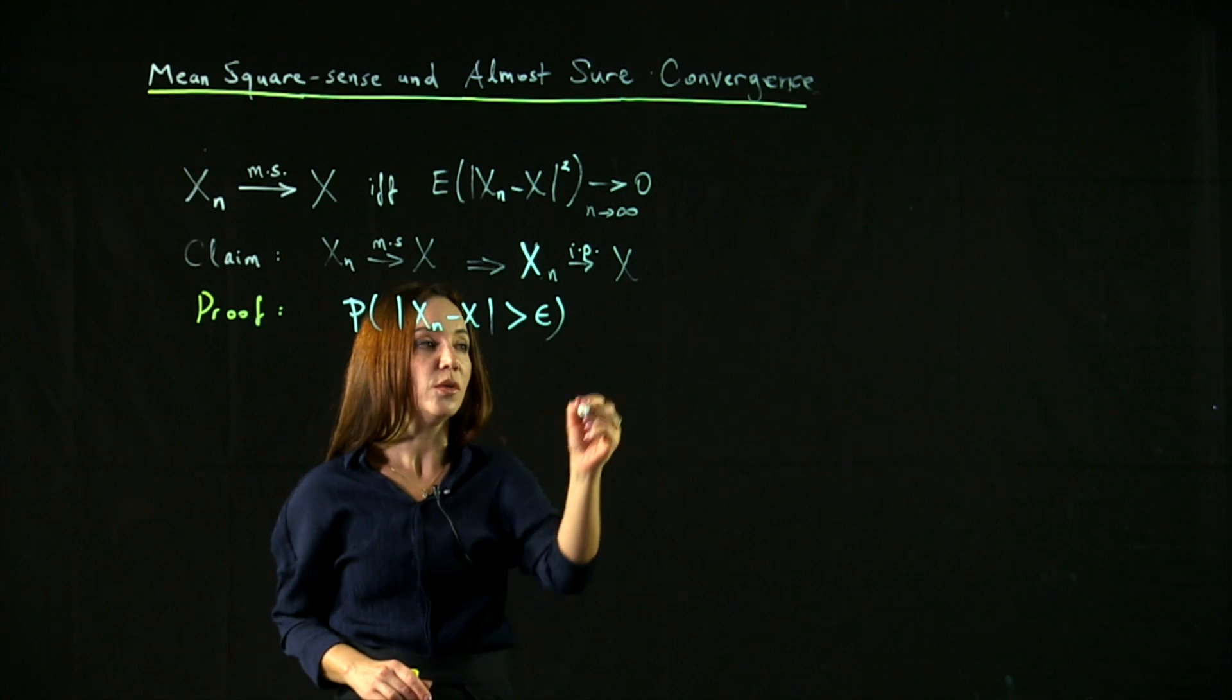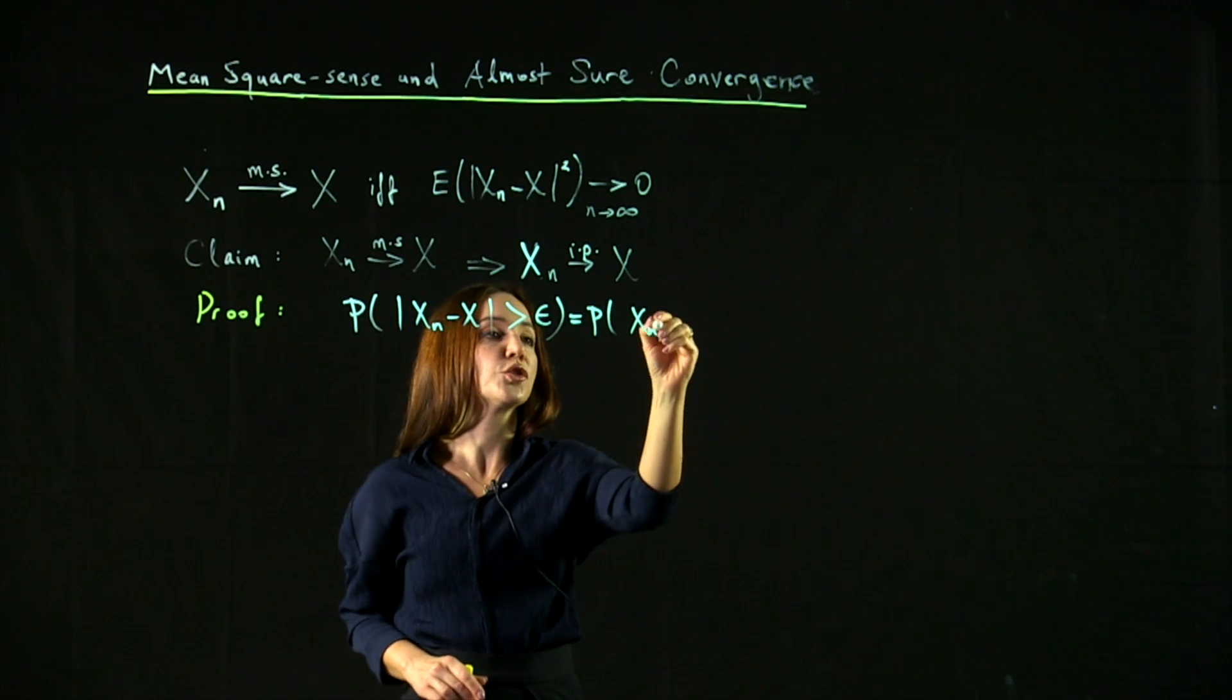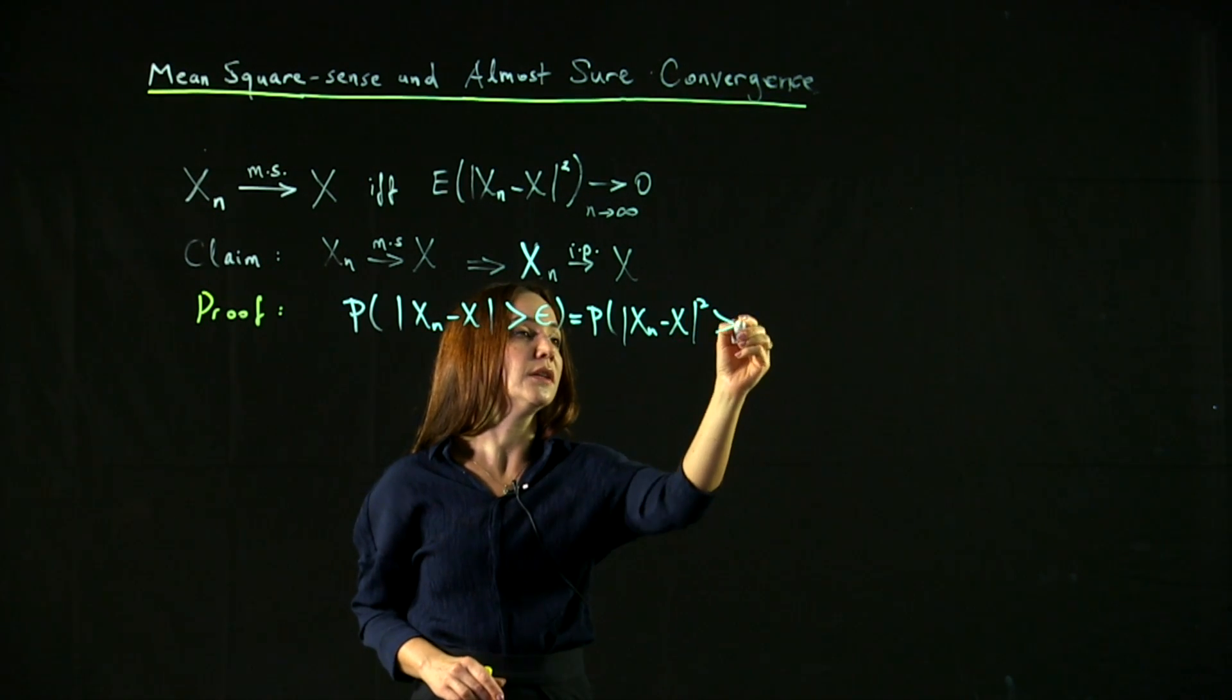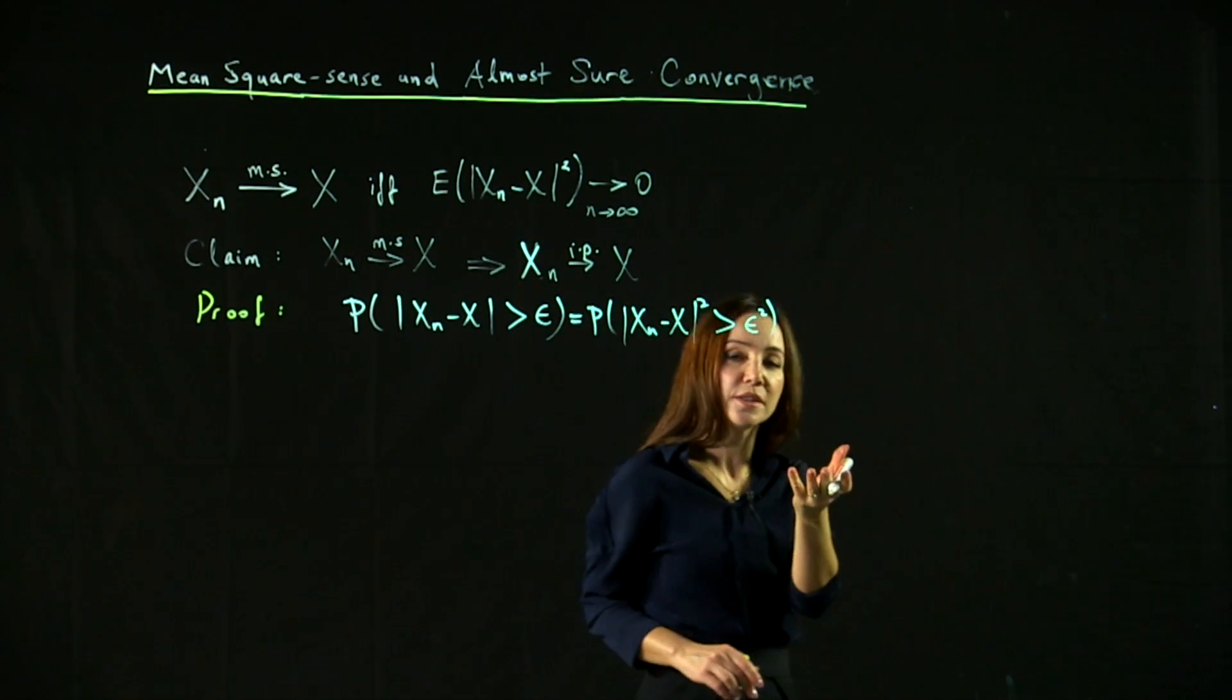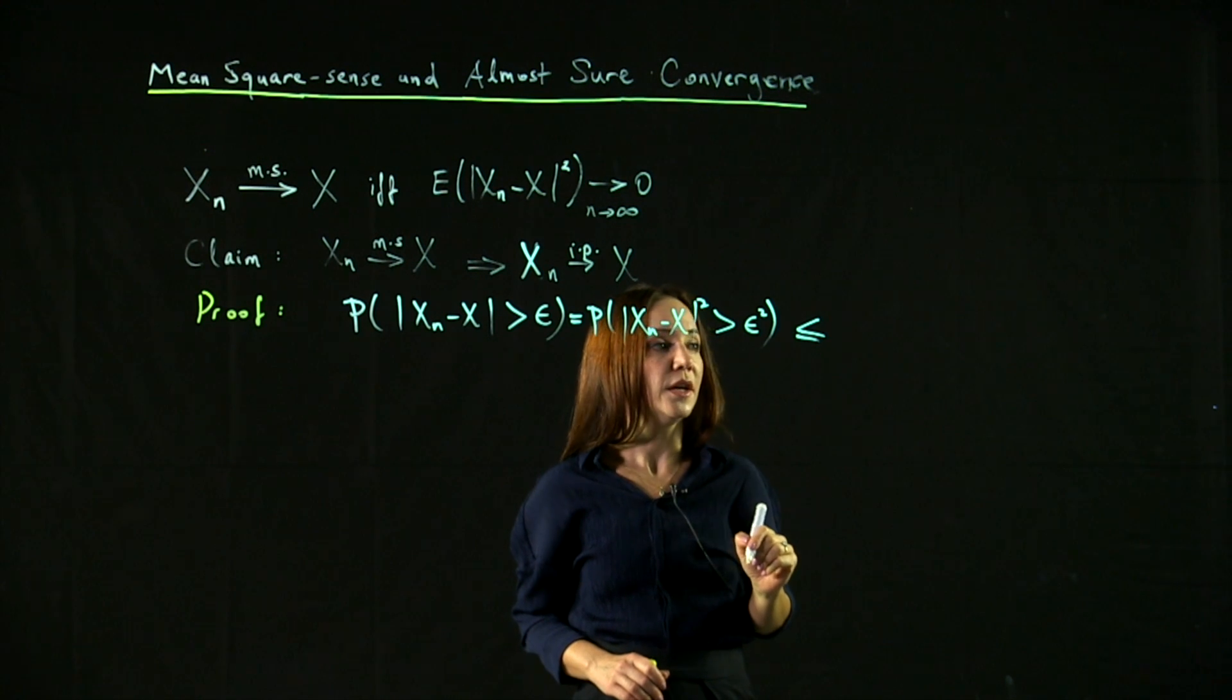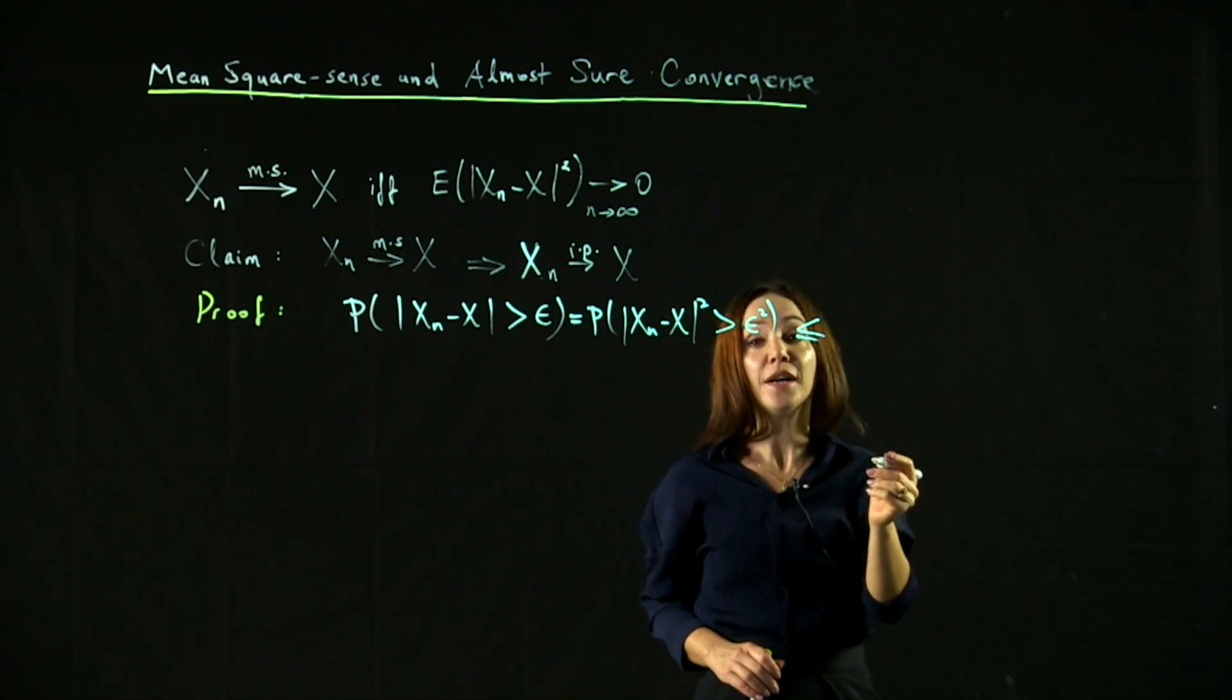Well, this, as you know, we can also express as the probability that the square of the difference is larger than y squared. But we know how to bound this by Chebyshev inequality. By Chebyshev inequality, this is, in fact,